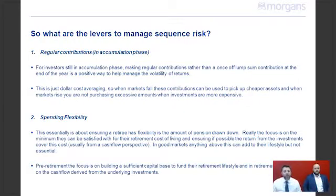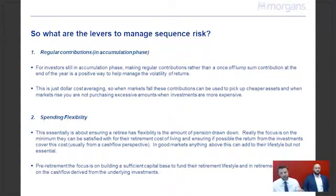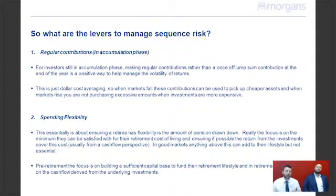There are only so many levers we can adjust in managing sequencing risk. The first lever is in the accumulation phase, and the next three are in pension or drawdown phase. For investors in accumulation phase, it's a simple process of making regular contributions rather than one lump sum at the end of the financial year. That's a positive way to help manage the volatility of returns.